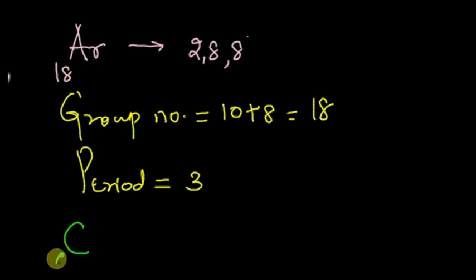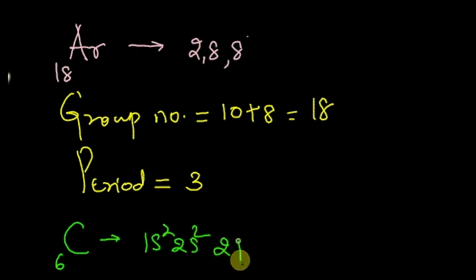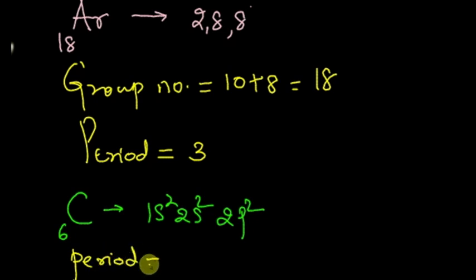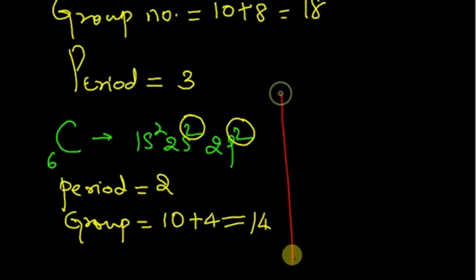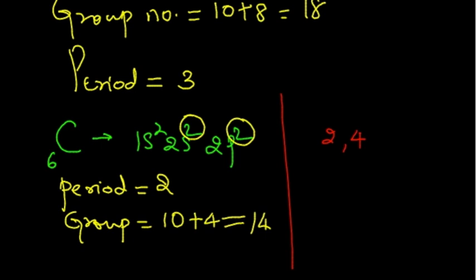Let us try carbon with atomic number 6 and electronic configuration 1s2, 2s2, 2p2. The period number is the highest value of the principal quantum number n, which is 2 — so period is 2. For the group number, the valence electrons are 2 plus 2 in the s and p orbitals, giving 4 valence electrons; 10 plus 4 equals group 14. In KLMN form the configuration would be 2, 4 — giving 2 shells and 4 valence electrons — confirming period 2, group 14.